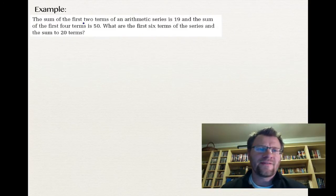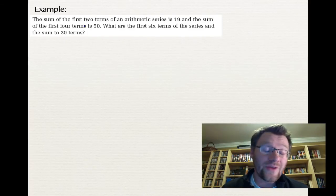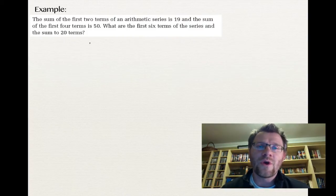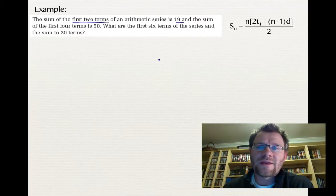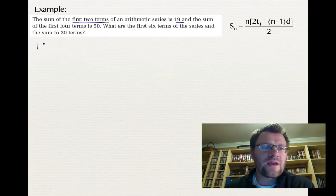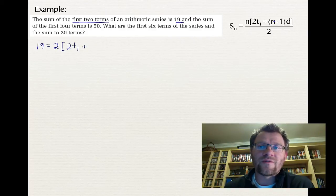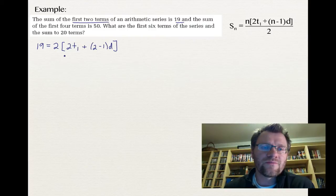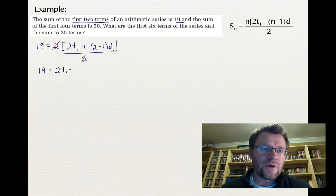Here's our last example: the sum of the first two terms of an arithmetic series is 19, and the sum of the first four terms is 50. What are the first six terms, and the sum to 20 terms? Using the SN formula for the first condition (S2 = 19, N = 2), the two 2s cancel and we get: 19 = 2T1 + D.